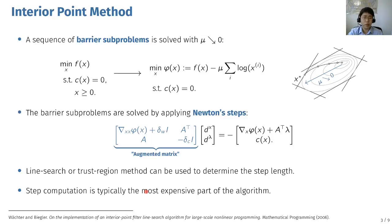From the computational standpoint, the most expensive part of this algorithm is computing the step direction. This is because when we have a large-scale optimization problem, the size of the Augmented Matrix can become extremely large, so solving this linear system becomes a computational bottleneck. Depending on the structure of the Augmented Matrix, the effective solution method for this linear system can become very different.